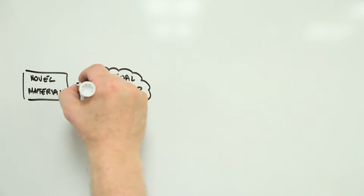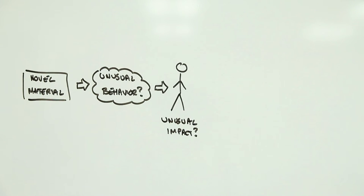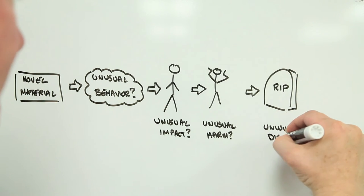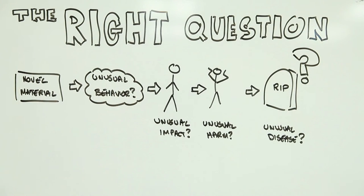If a material is designed to behave in unusual ways, who's to say that that unusual behavior won't lead to unusual biological impacts that in turn lead to unusual harm and unusual diseases? However, this is also a somewhat misleading question, and here's why.